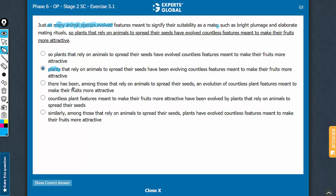But answer choice C has there has been. So the comparison is not going to be right here. Answer choice D has countless plant features rather than plants. See, animal species evolved cannot be compared with countless plant features. It has to be plant and not plant features.